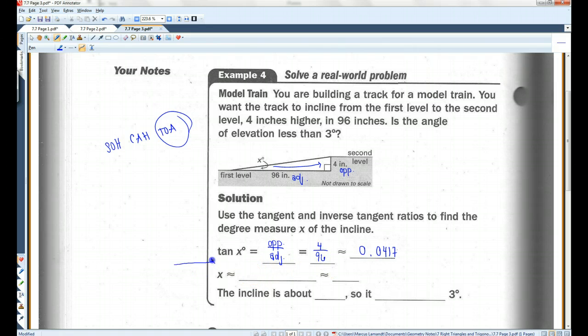Tangent of X equals 0.0417. But we are not looking for tangent of X. We are looking for X. So, I am going to take the inverse tangent of both sides. So, X is inverse tangent of 0.0417. Let's pull out my other calculator.